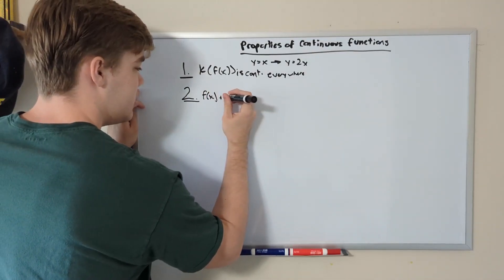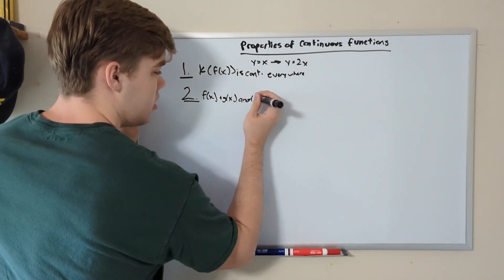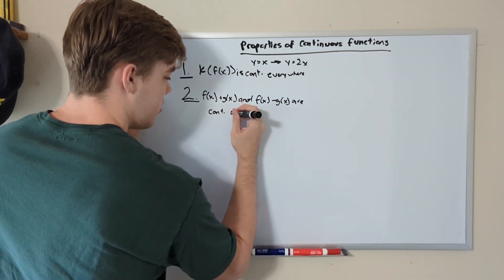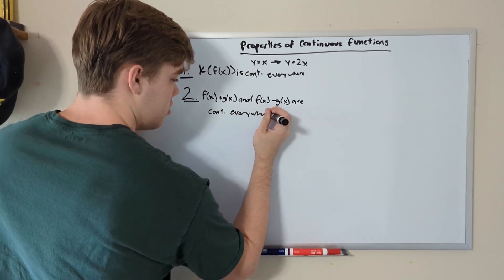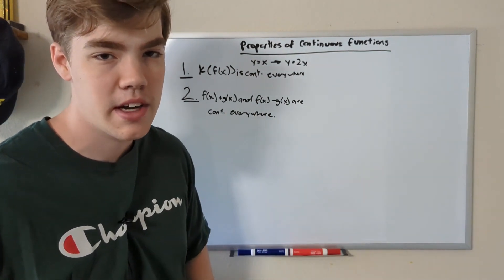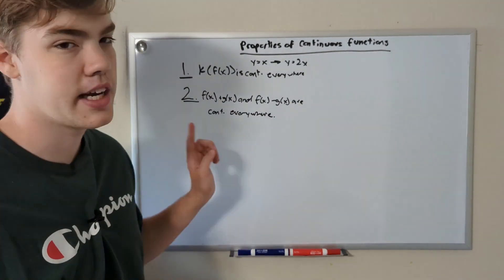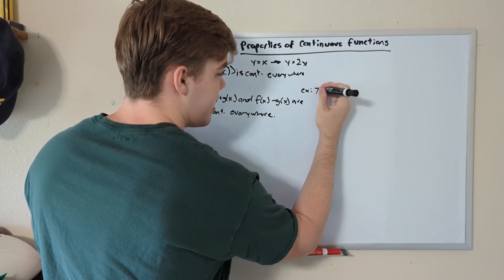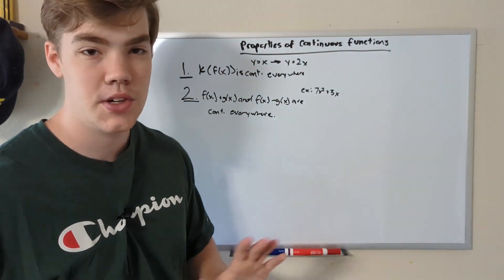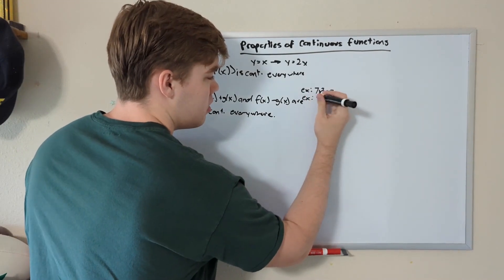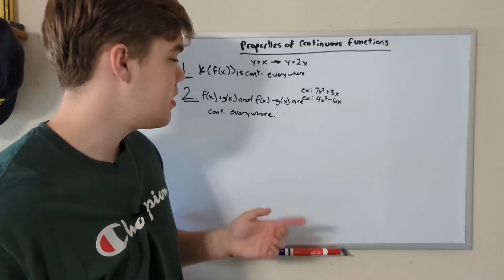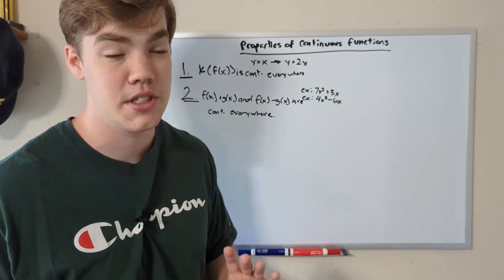Property number two: f(x) + g(x) and f(x) - g(x) are continuous everywhere. If we add two functions together or subtract two functions, they're still going to be continuous across the entire domain no matter what. For example, 7x² + 3x is still continuous everywhere, and 4x³ - 6x is also still continuous across the entire domain.